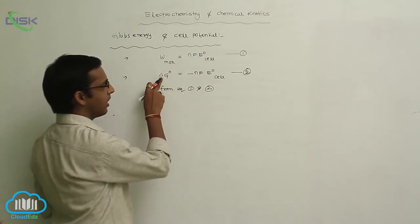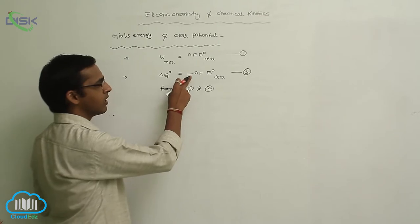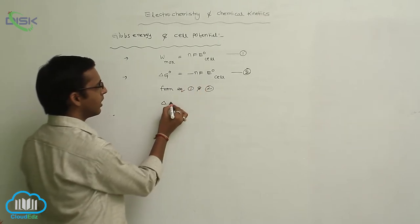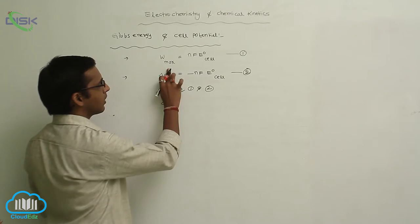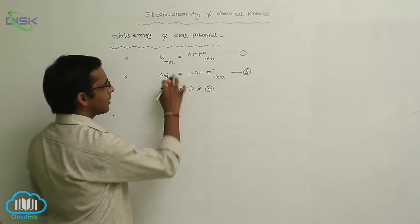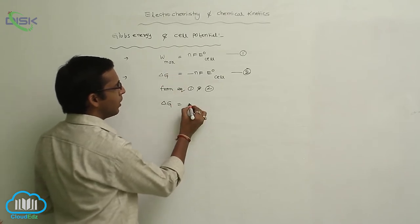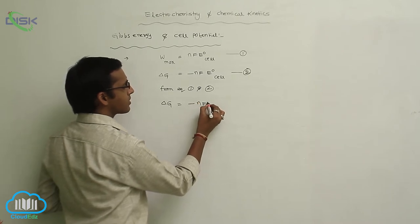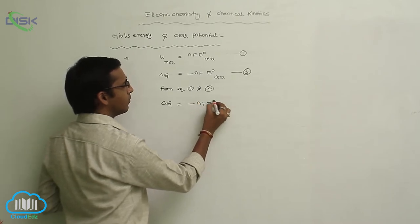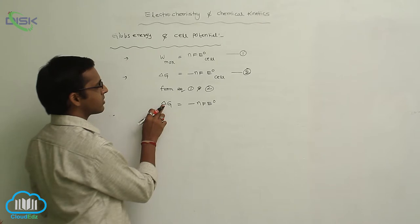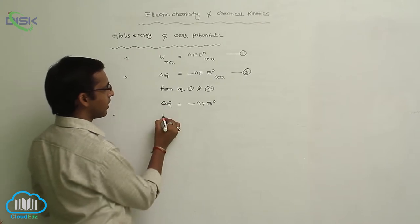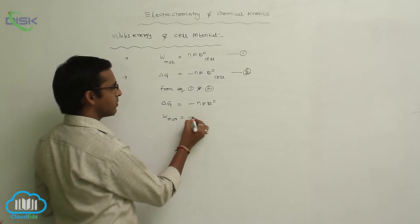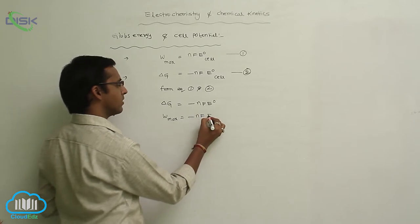From those equations: W maximum equals NFE naught cell, and delta G naught equals minus NFE naught cell. This means delta G equals minus NFE naught cell, and in place of delta G we can write W maximum. So W maximum equals NFE naught cell.